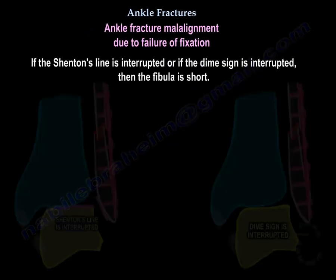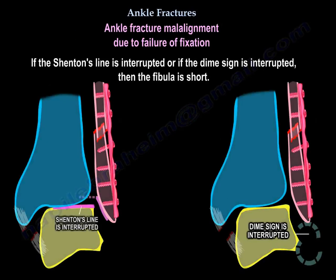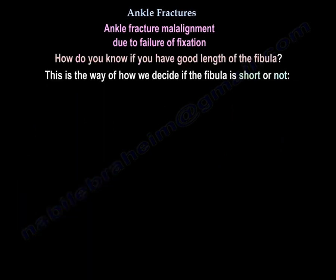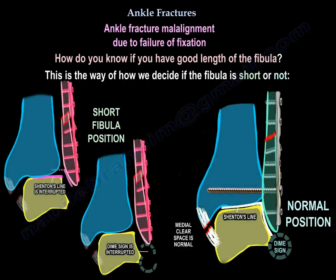If the Shenton line is interrupted and the Dime sign is interrupted, then the fibula is short. How do you know if you have good length of the fibula? This is the way we decide — you can see here the fibula is short, and you can see here the fibula is normal.